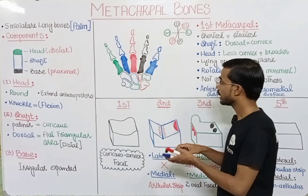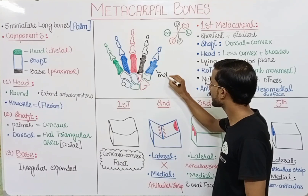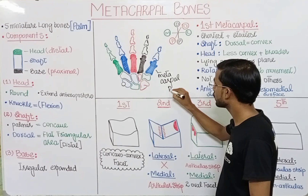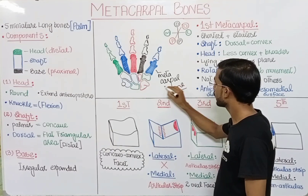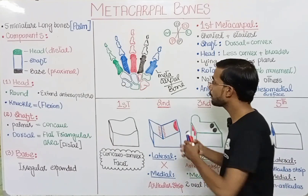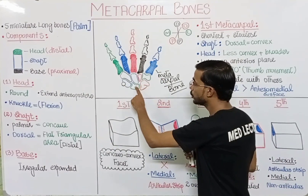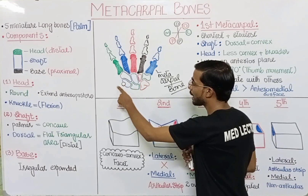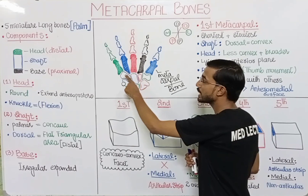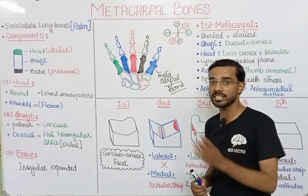Here are the five metacarpal bones: one, two, three, four, five. And beneath you will see the carpal bones — scaphoid, lunate, triquetral, pisiform, trapezium, trapezoid, capitate, hamate. These are the carpal bones discussed in the previous lecture. Our main focus will be on the metacarpal bones in this lecture.